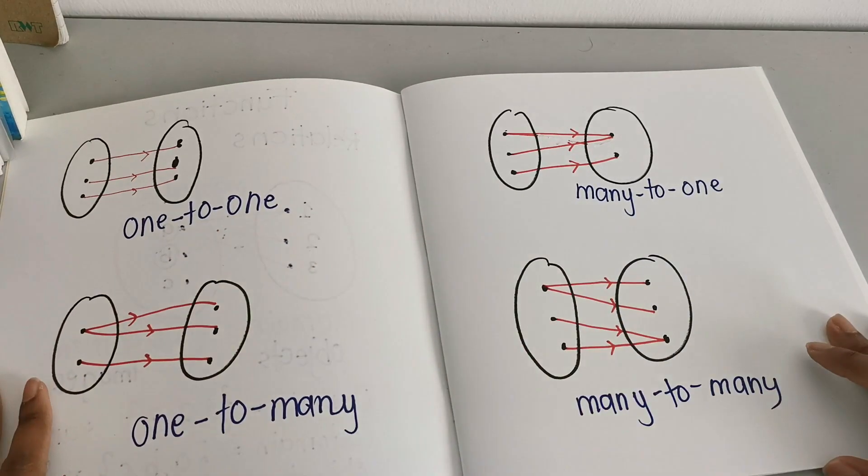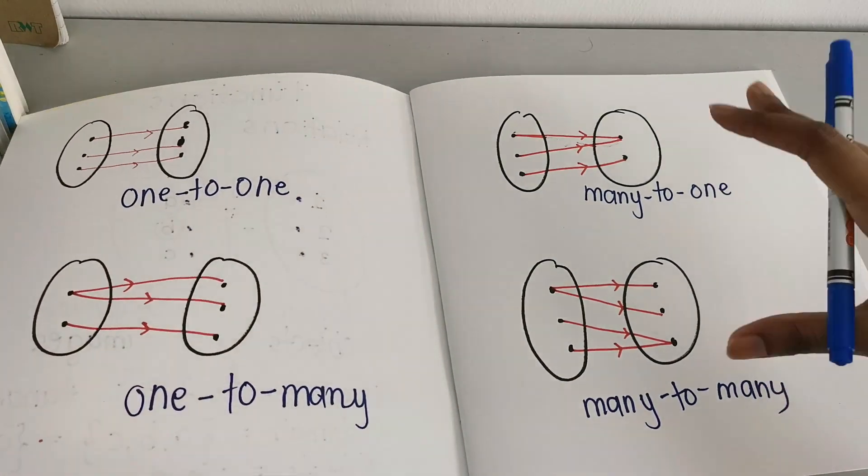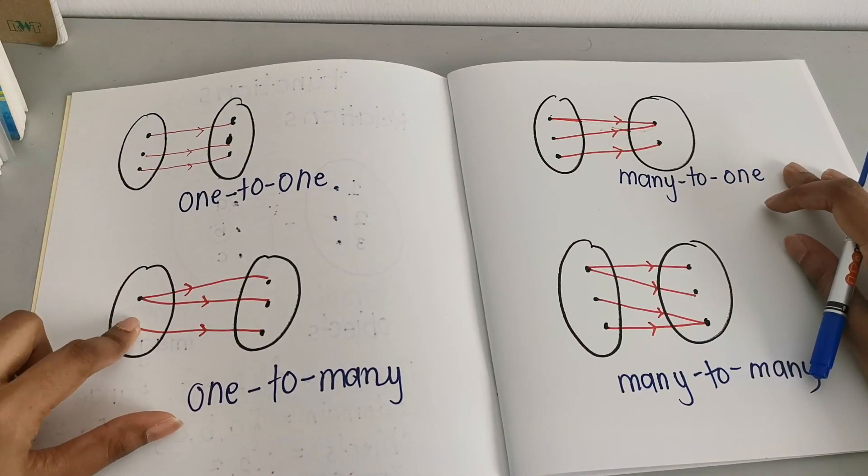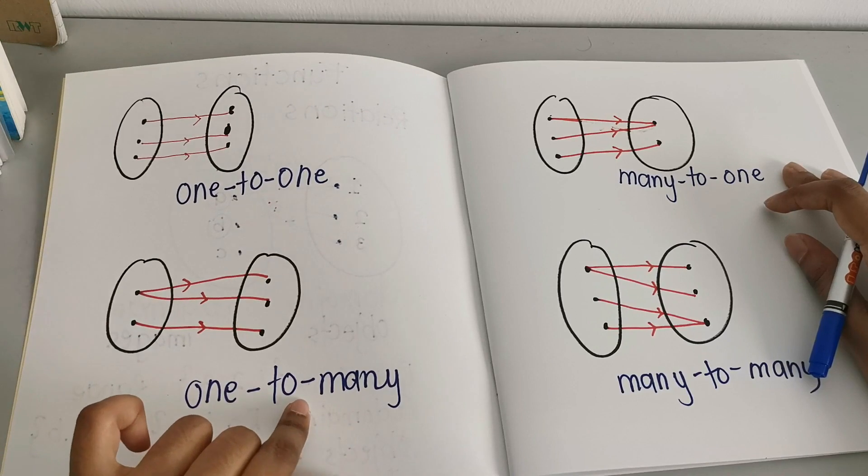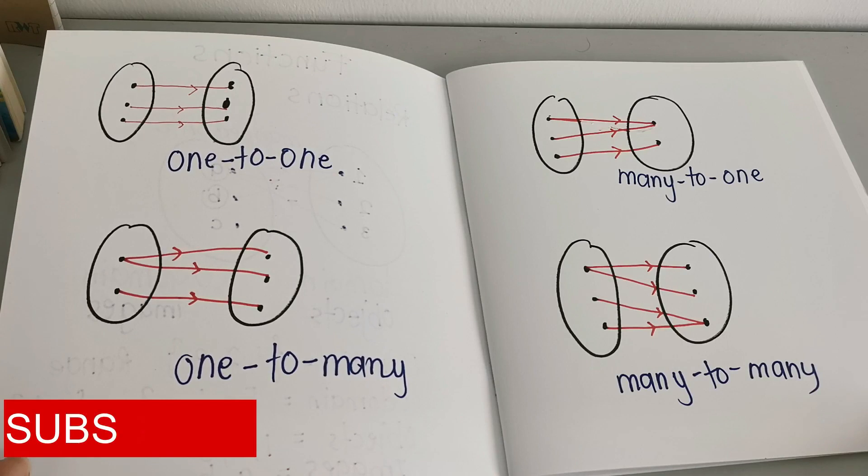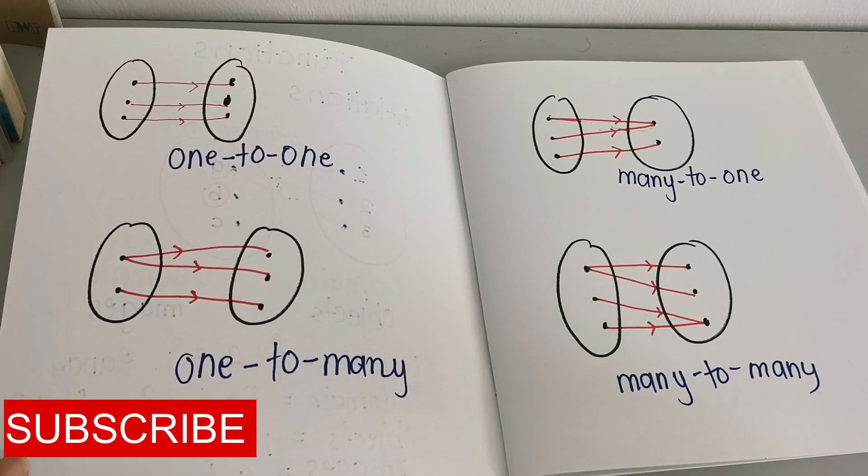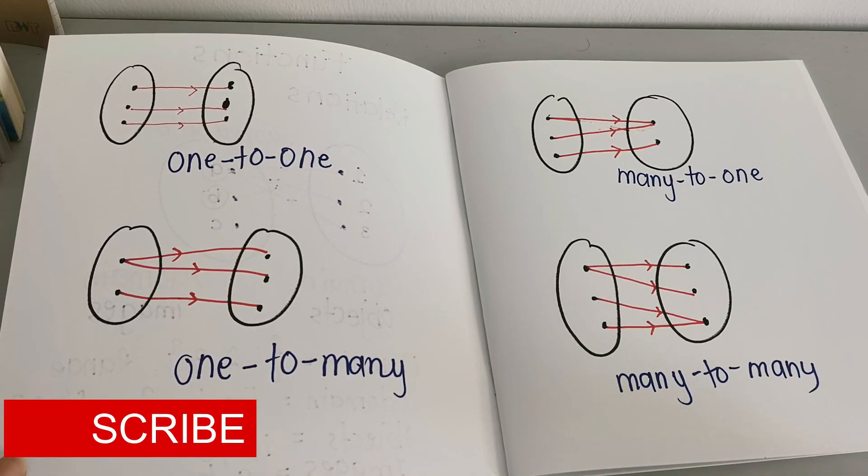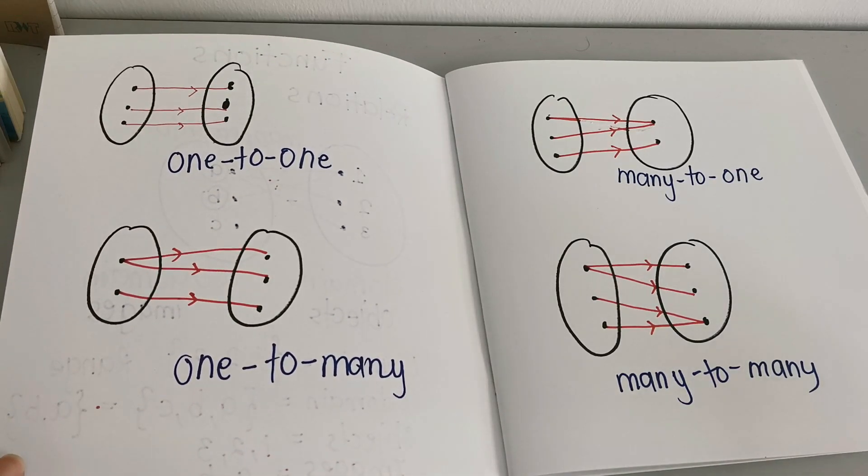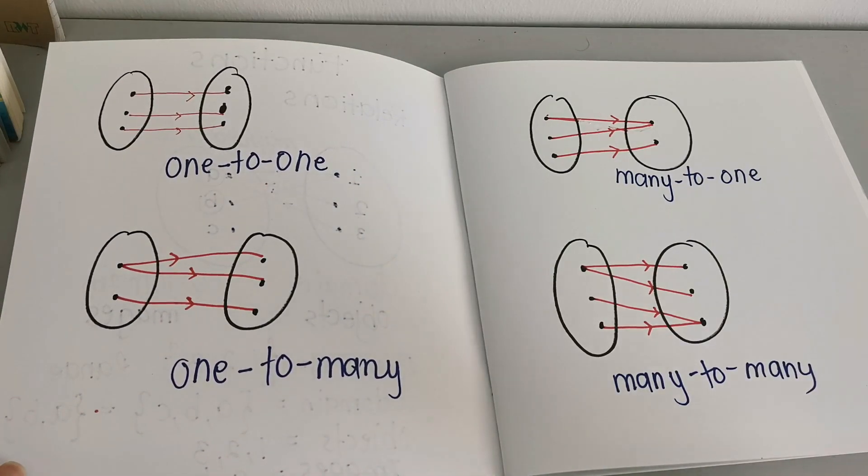Now these are the 4 types of relation that you need to know. It's very simple. All you need to identify is how many objects are being mapped to how many images. So you can proceed by clicking the next link which is below in the description box to see examples of functions, solving function problems. So until I see you in the next video, bye.